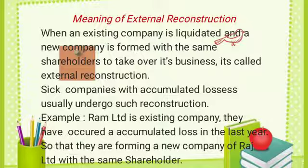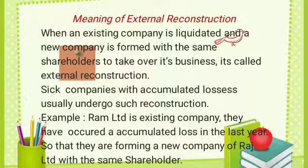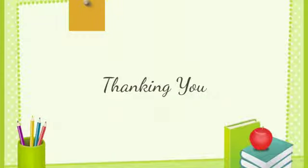External reconstruction: when an existing company is liquidated and a new company is formed with the same shareholders to take over its business, it is called external reconstruction. Sick companies with accumulated losses usually undergo such reconstruction. The existing company that gets liquidated is termed as the transferor company, and the new company formed is termed as the transferee company. For example, Ram Limited is an existing company that has accumulated losses, so they are forming a new company, Raj Limited, with the same shareholders. Thank you for giving me this opportunity.